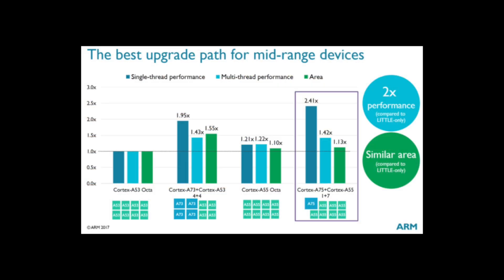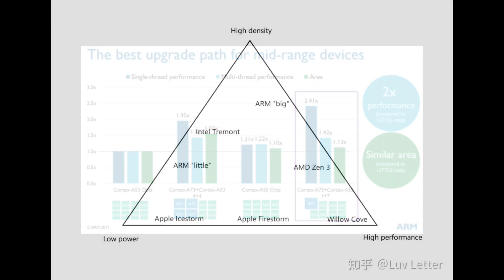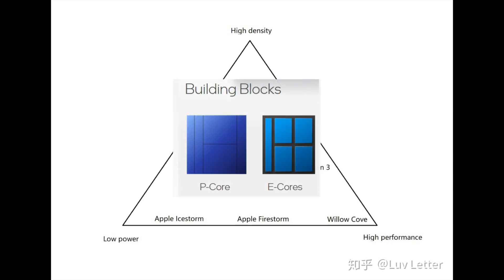But customers may be confused by the term efficiency — it has two meanings: power efficiency and area efficiency, or density for short. As you can see, Intel's Atom series and ARM cores are targeted for high density, which means the same area could contain more small cores.